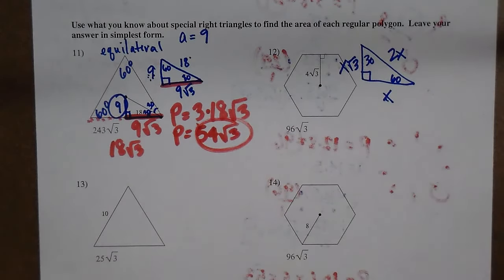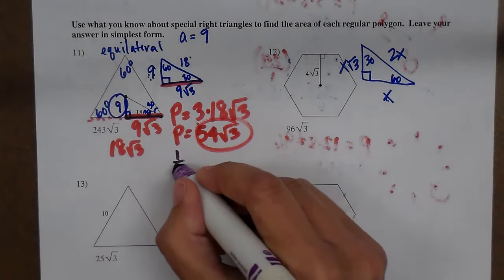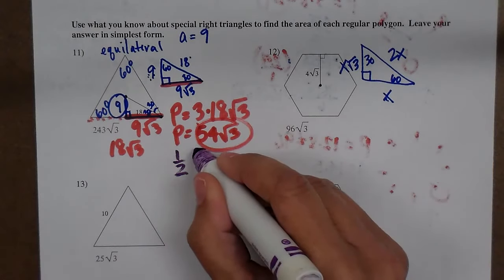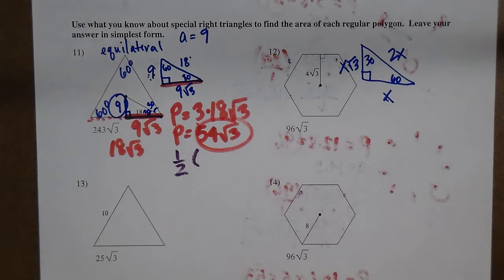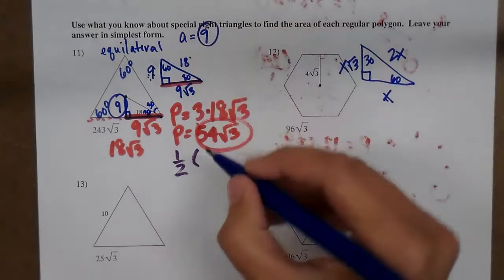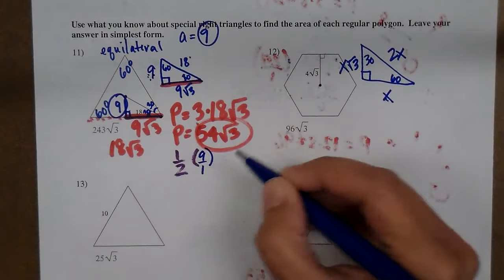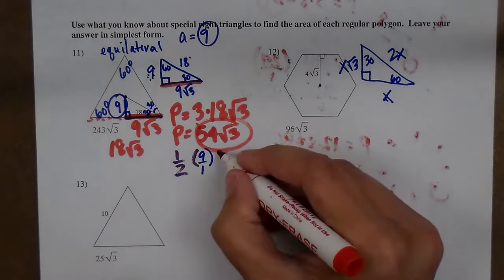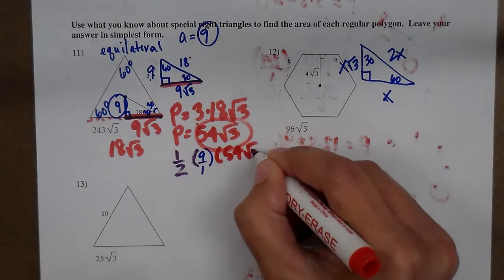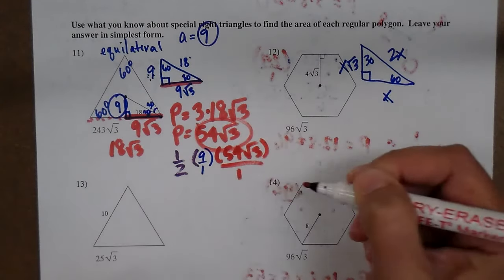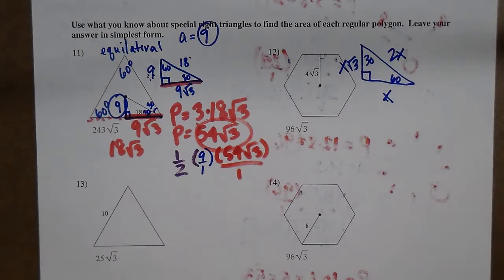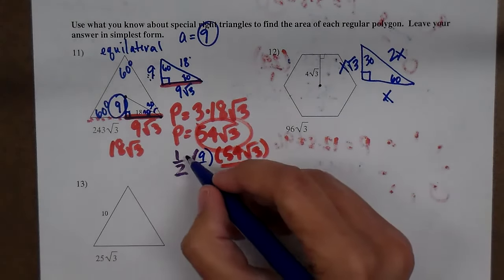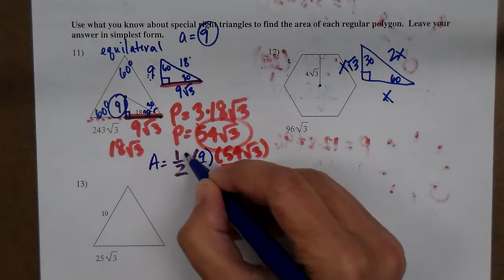Now let's do the area. The area would be 1 half the apothem, and my apothem is 9, times my perimeter, which is 54 square roots of 3.